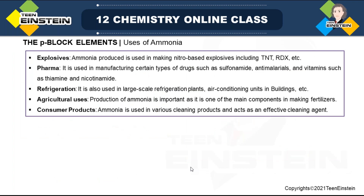Hello everyone. Today we will start with uses of ammonia, because how we can make ammonia and what are the chemical properties of ammonia we have already seen in last year. After ammonia, the next important compound for nitrogen is nitric acid, which will be discussed. Then different allotropes of phosphorus, oxoacids of phosphorus, and related problems will be discussed.